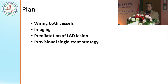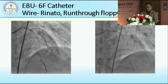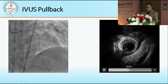So my plan for treating this case was wiring both vessels, doing imaging, pre-dilation of the LAD lesion, and following a provisional single stent strategy. We wired the LAD and diagonal with Renato and floppy wire respectively, and we did an IVUS pullback in the LAD lesion.